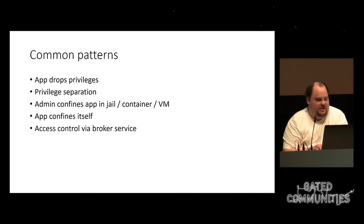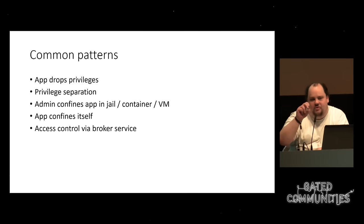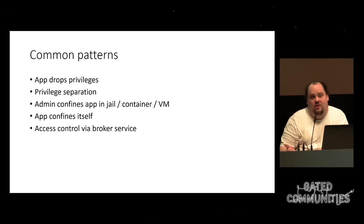Common patterns for achieving this: the app drops privileges — you do all the really hard and dangerous stuff in the beginning, then drop privileges and hope the bug the attacker finds is in the code after the drop. This may or may not be a sound assumption. Another way is privilege separation: split your process and move the dangerous part to a separate process that can't really do anything. Another approach is putting the app in a VM, container, or jail.